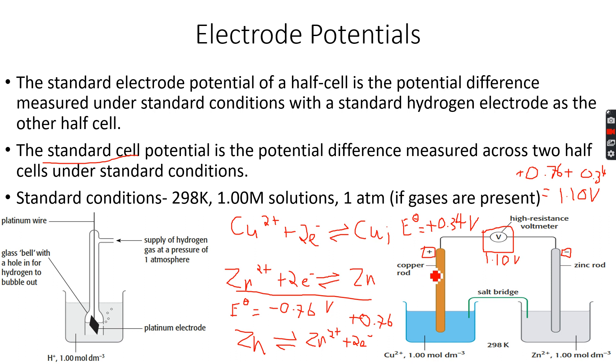The direction of electron flow is always from the negative electrode to the positive electrode like this. So this is how electrons flow and this is how standard electrode potentials work.